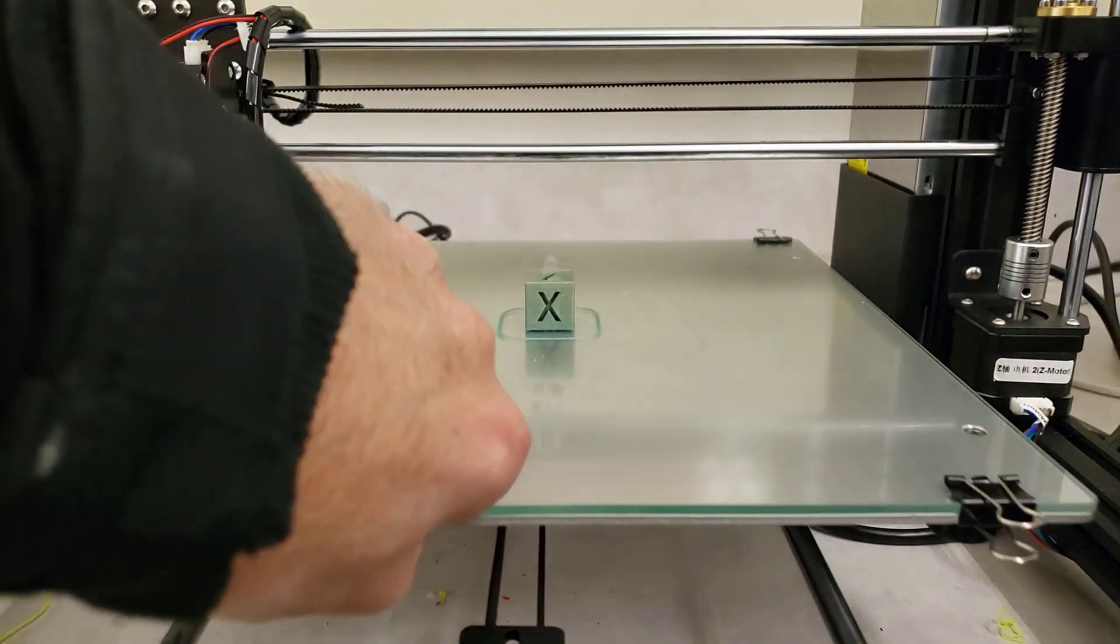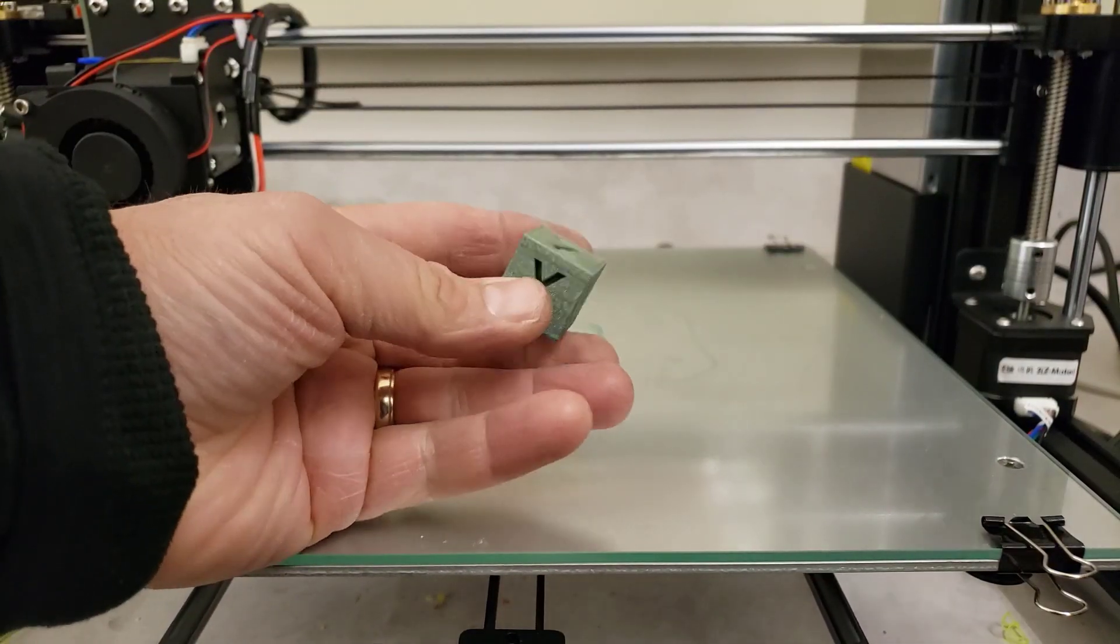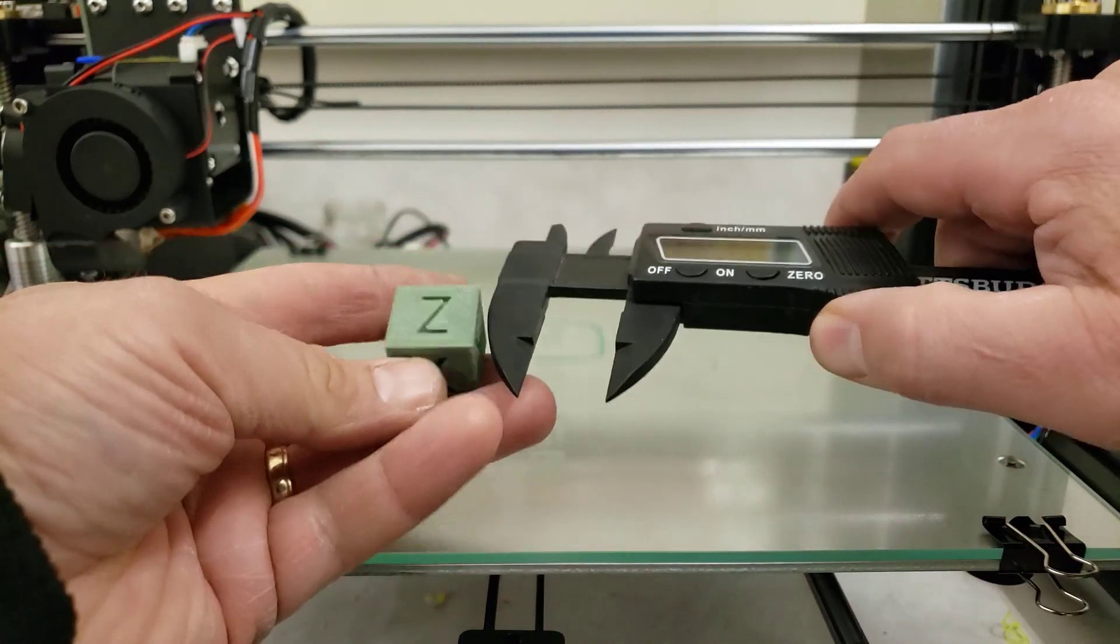Alrighty friends, so moment of truth, let's see how accurate we are out of the box. So first let's measure X: 20.1, 20.2. That's pretty impressive.